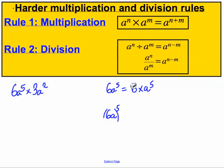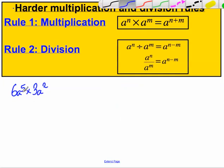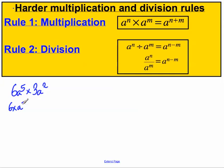So based on that, let's say what 6a to the power of 5 means. It means 6 multiplied by a to the 5. We've got multiply, so 3a squared must mean 3 multiplied by a squared.